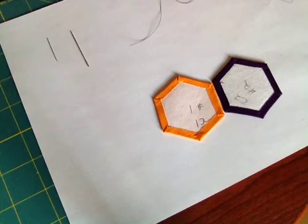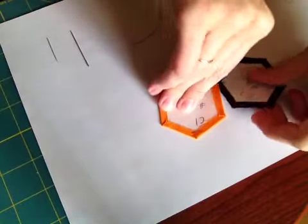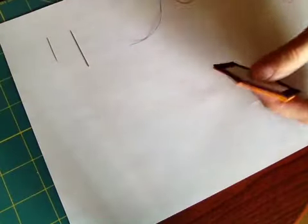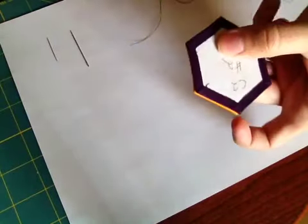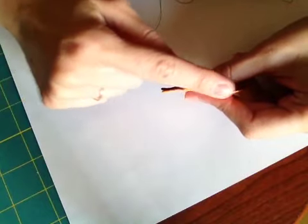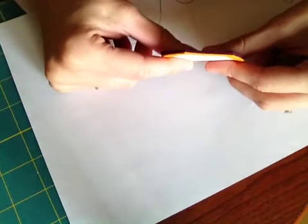Usually when piecing hexagons together, they are pinched right sides together and then stitched here along the edge with them pinched.